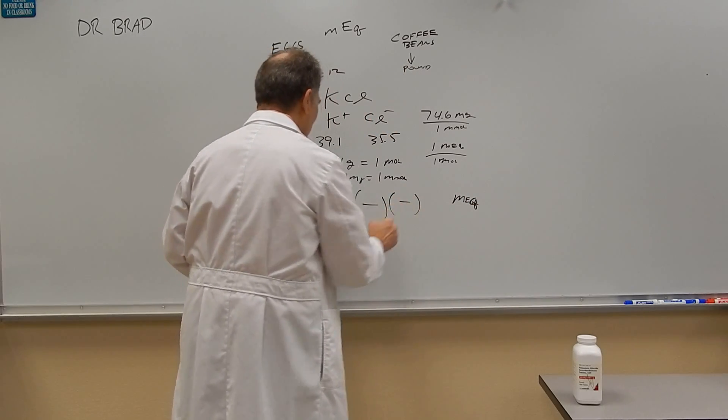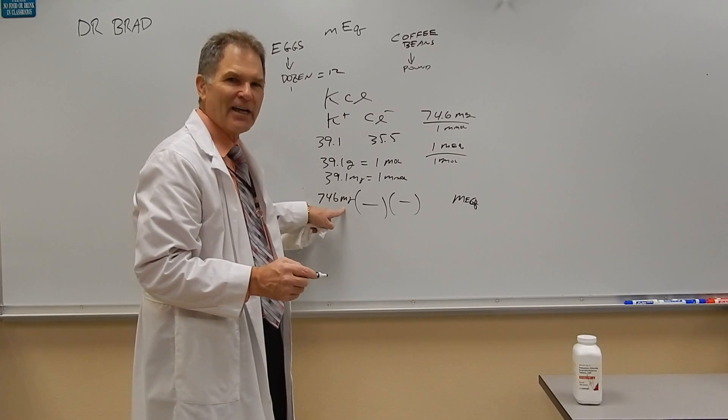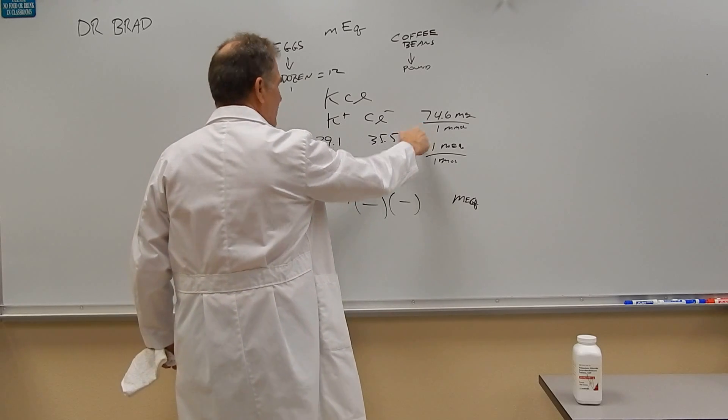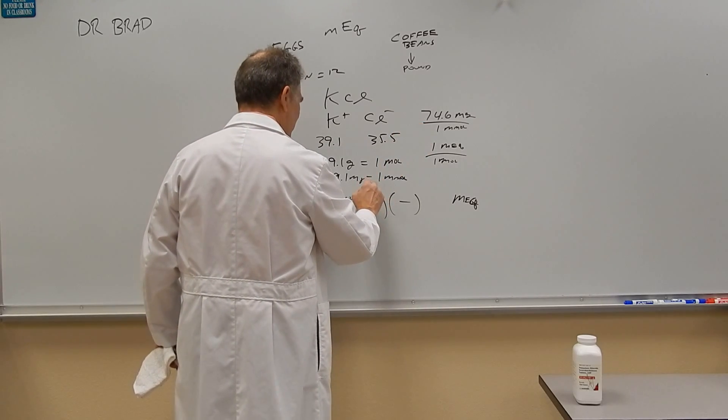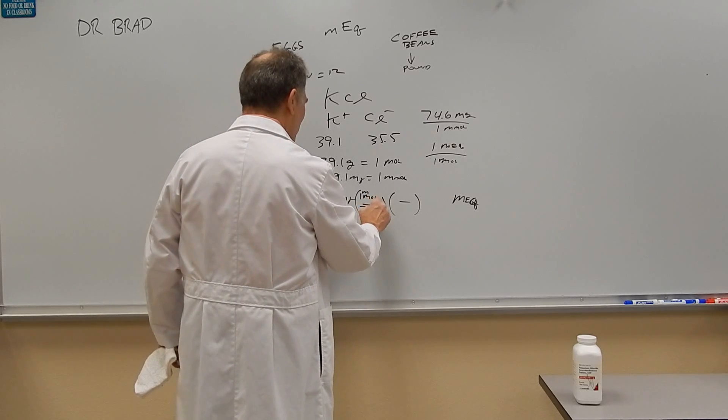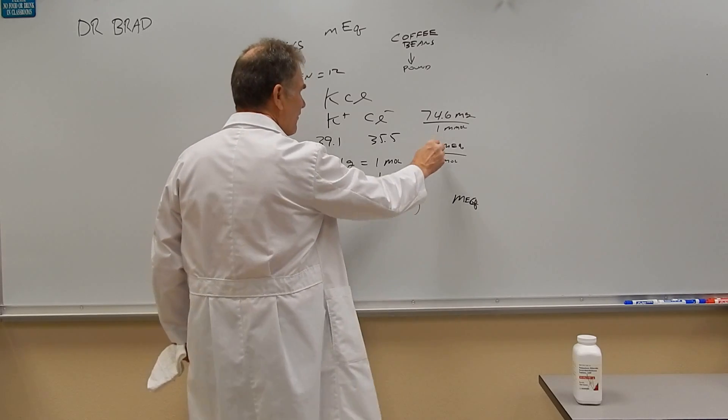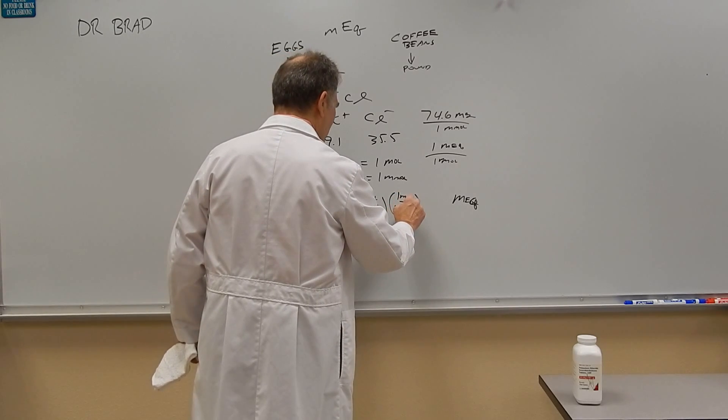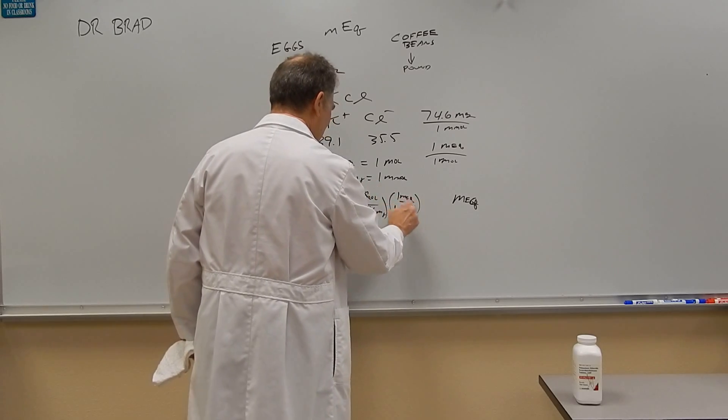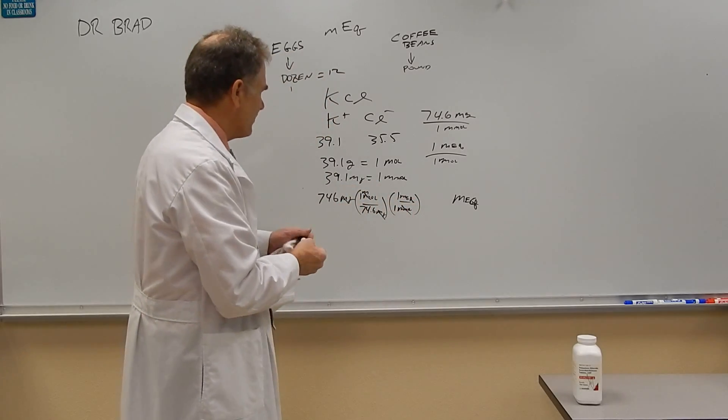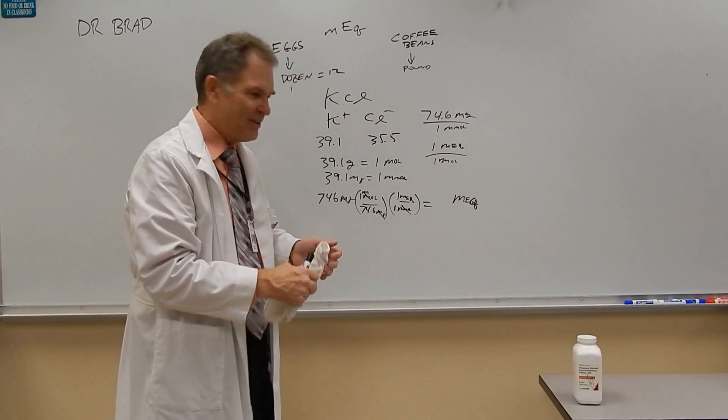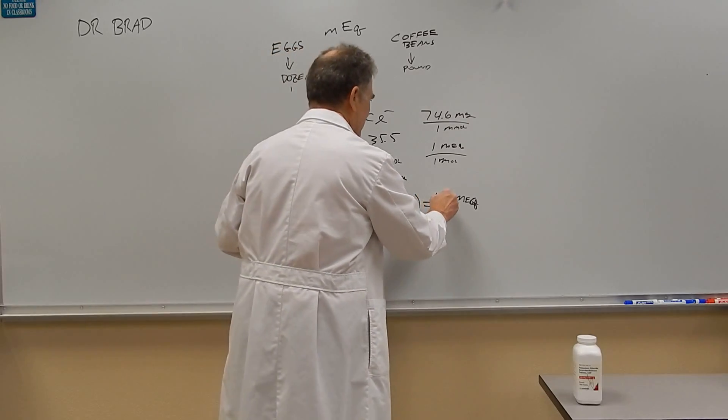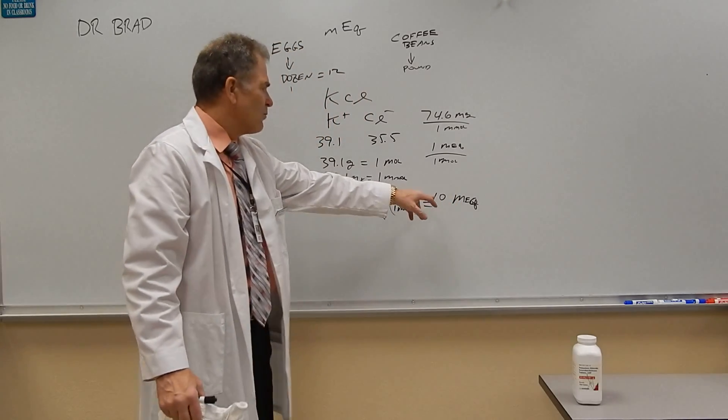Then we put in our ratios so that the units of the given are canceled out and we end up with the units of the answer. So we have one millimole per 74.6 milligrams, and then we have one milliequivalent per one millimole. They'll cancel, they'll cancel. So I made it easy on myself. So 746 divided by 74.6 is 10, so 10 milliequivalents is equal to 746 milligrams.